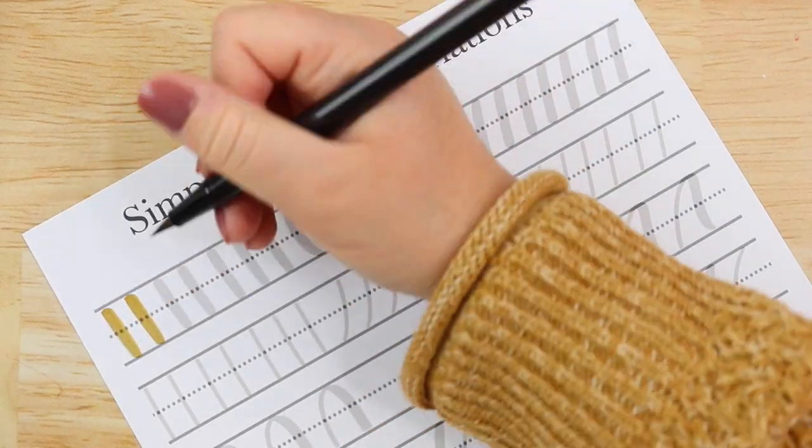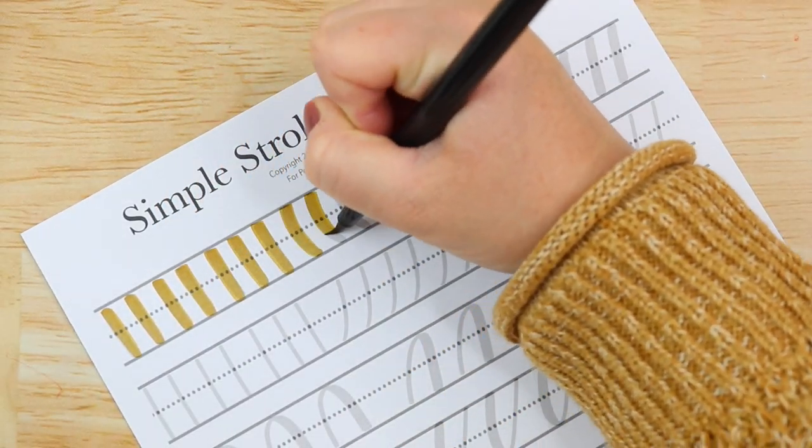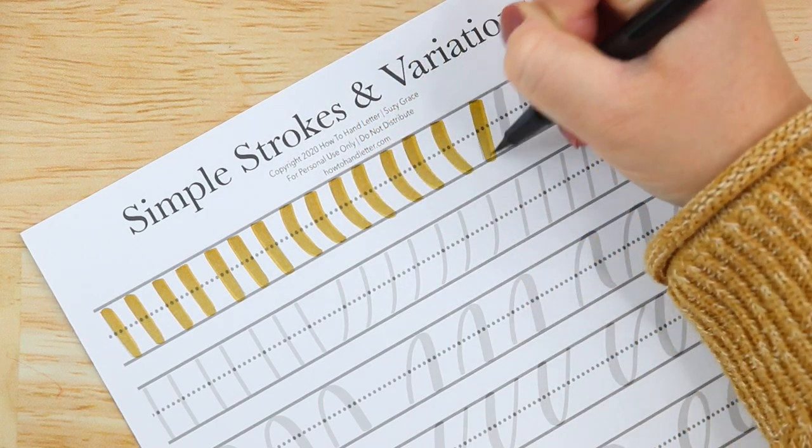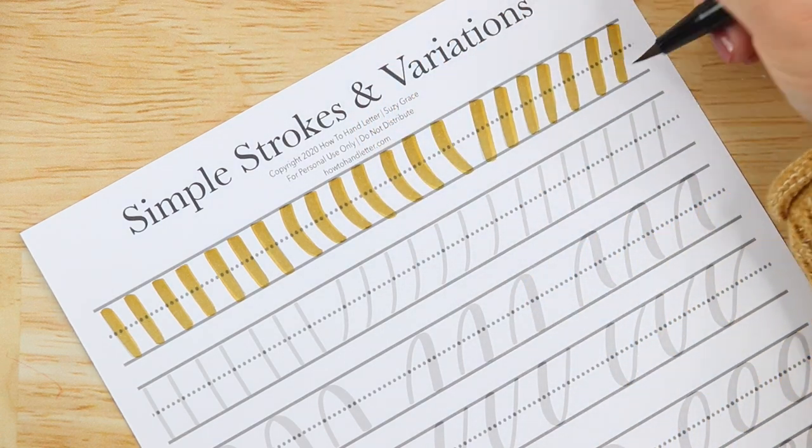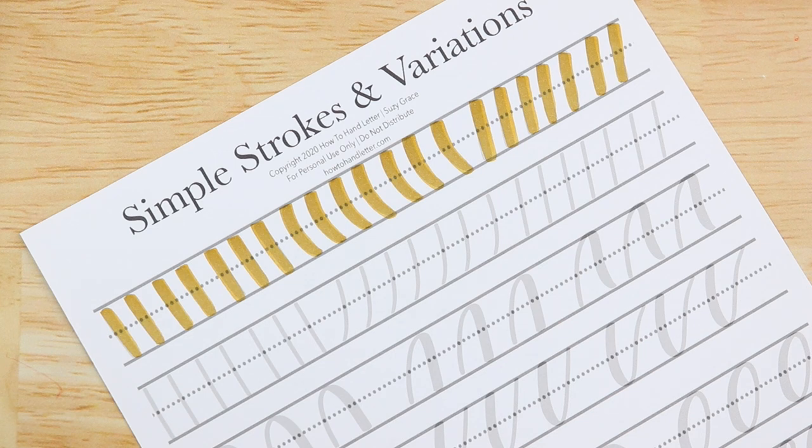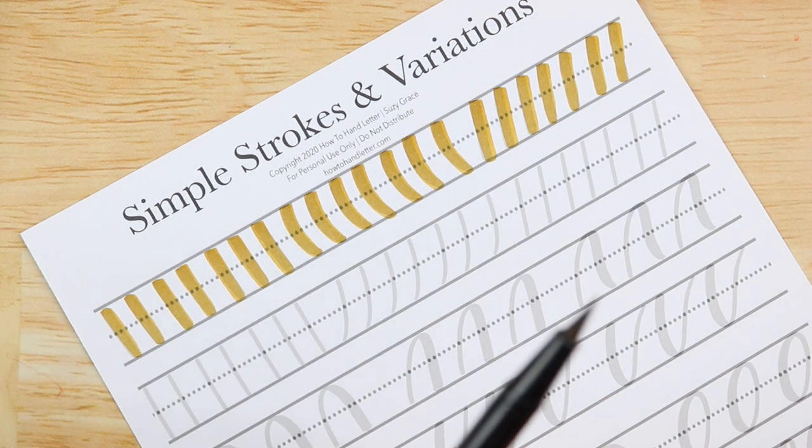But if this still feels a bit too freehand, then make sure to grab the simple strokes and variations worksheets that are also available in the free resource library. These can help you with your simple strokes. If you are not yet feeling comfortable with freehand hand lettering, or if you are working on tip number two, where you are getting to know your brush pens.